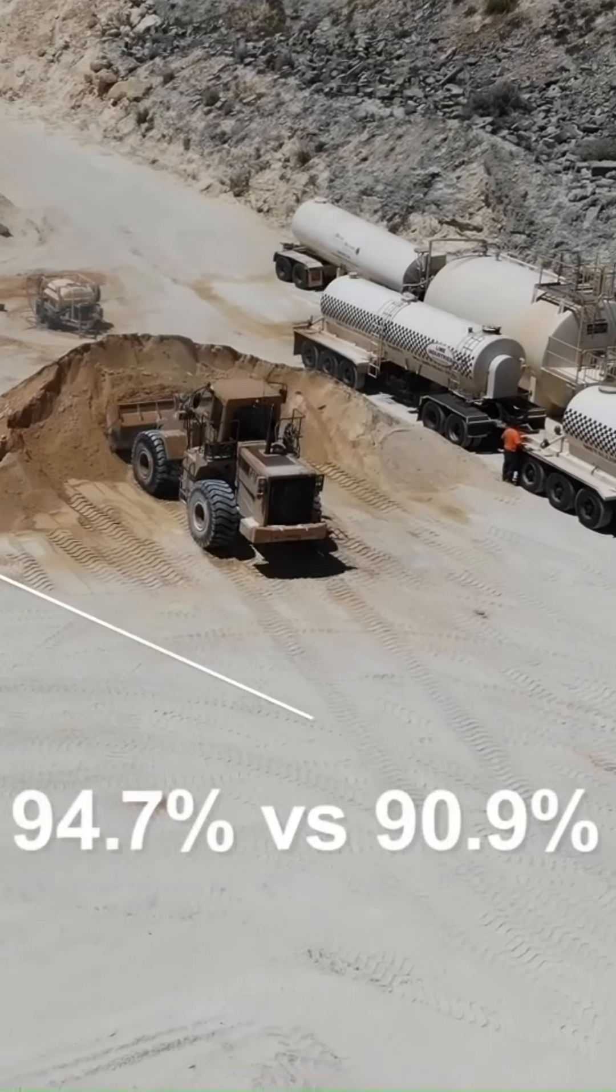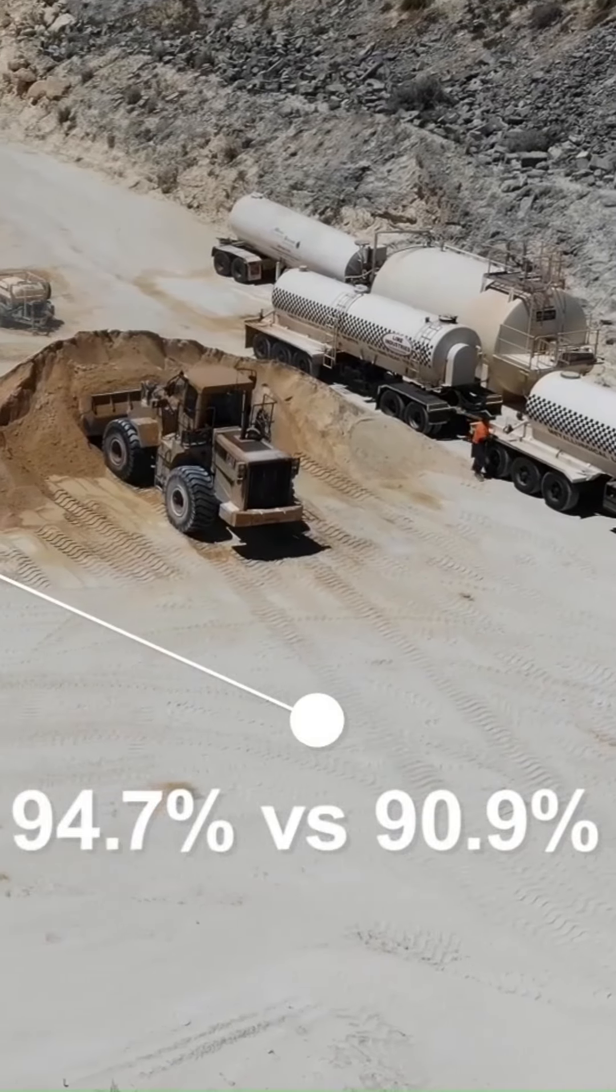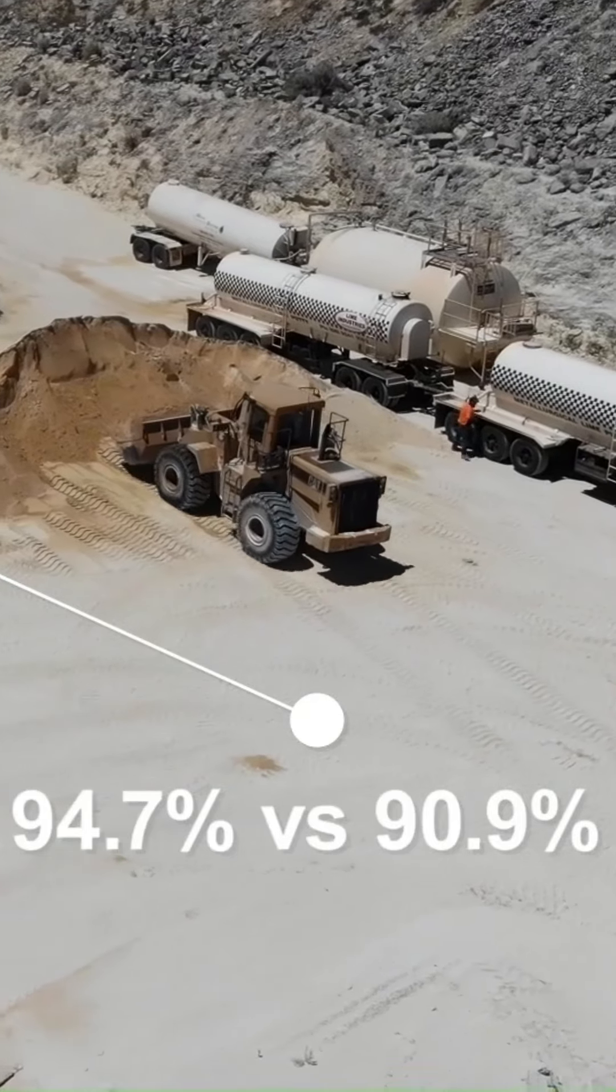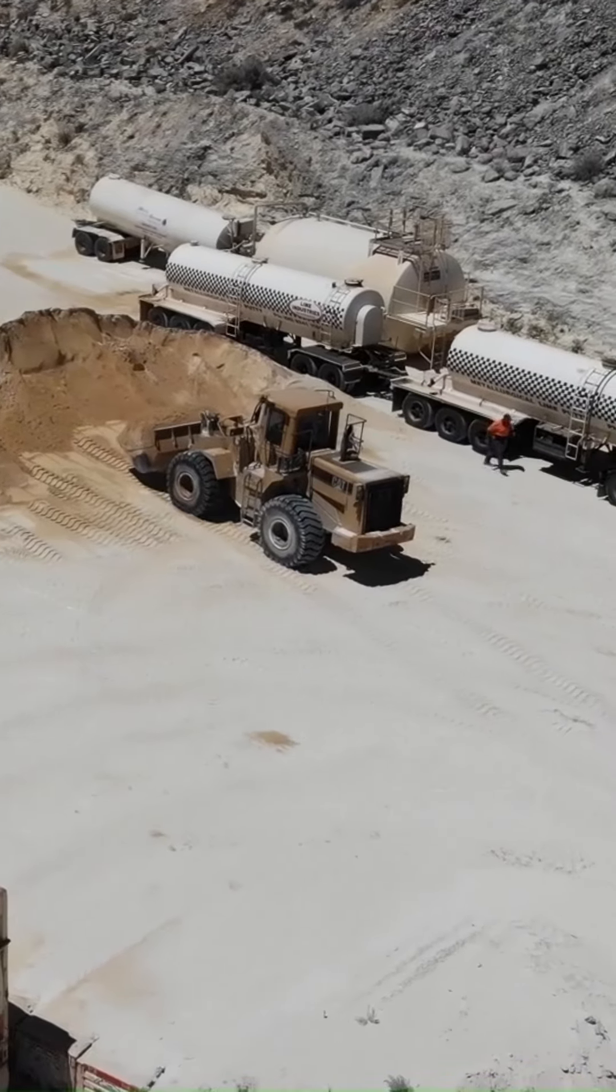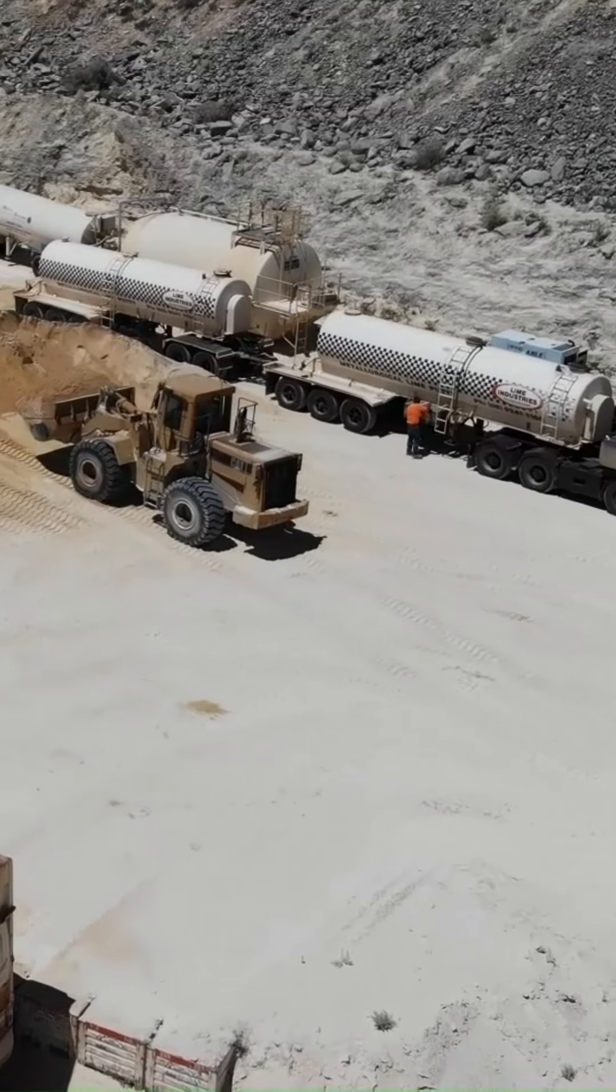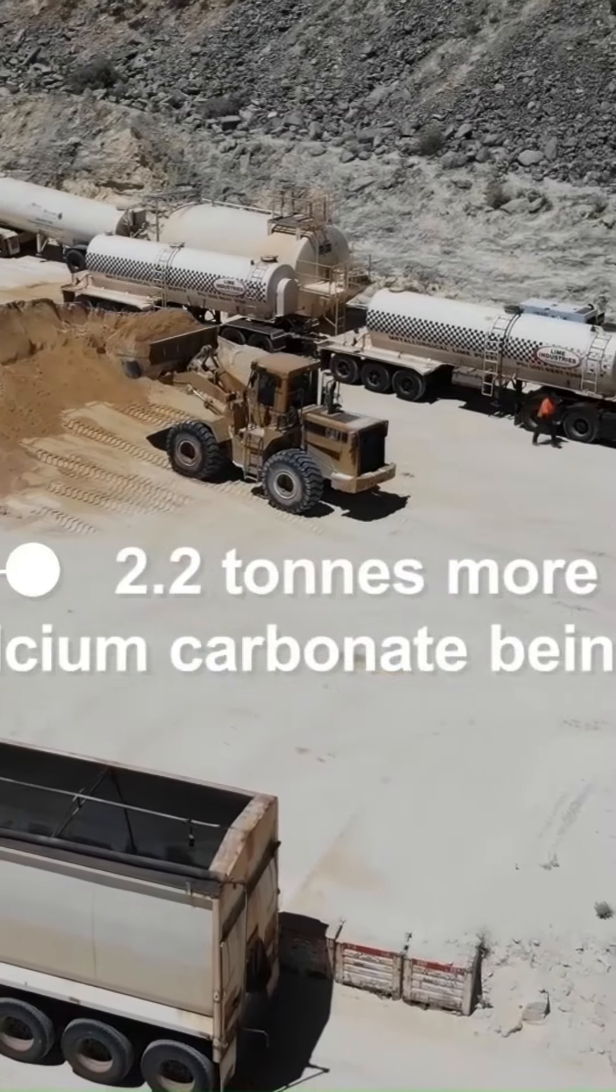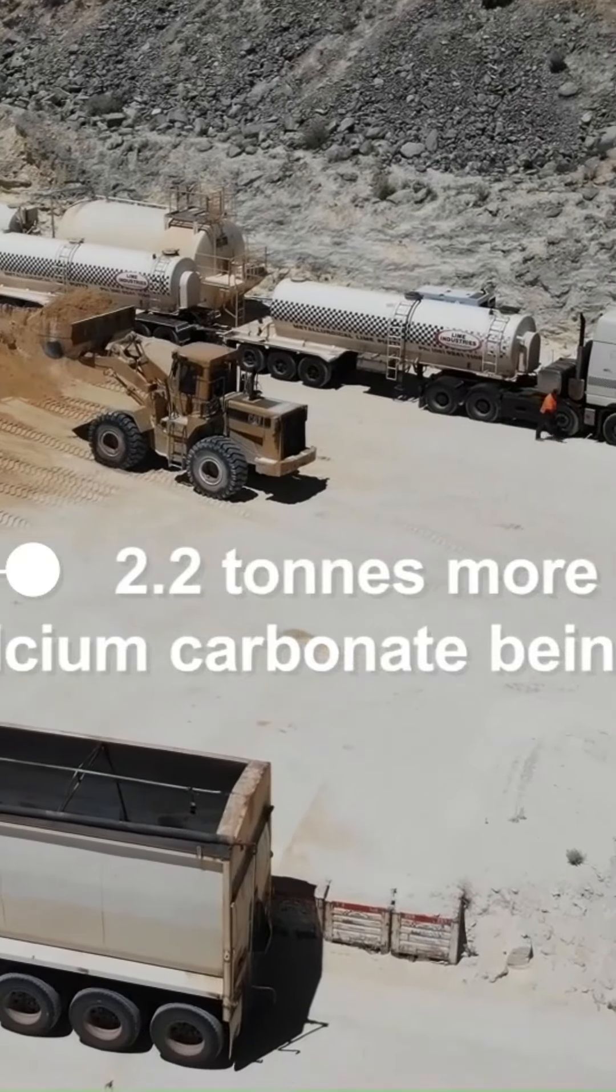Let's take an example. A company with a Bulk NV of 94.7% versus a company with a Bulk NV of 90.9%. In a standard 60 tonne load, there is 2.2 tonnes more of calcium carbonate, the active component of lime, being carted.